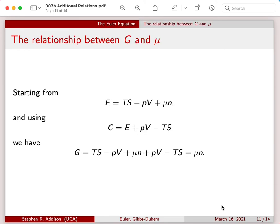First though, we can say, if we start with the Euler equation here, and we plug in the Gibbs free energy, you can see that many of the terms cancel out, and we're just left with G is equal to μ times n.